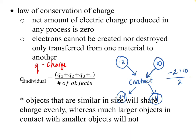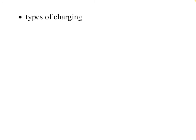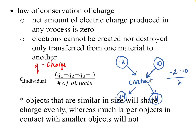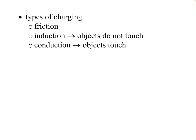How do we charge insulators? Mostly through friction. The three types of charging are: friction — the main way to charge insulators, like rubbing a rubber rod with fur; induction — where objects don't touch (covered in the next video); and conduction — where objects touch and share their charge, like the example just described where two charged objects touched, shared charge, and separated.